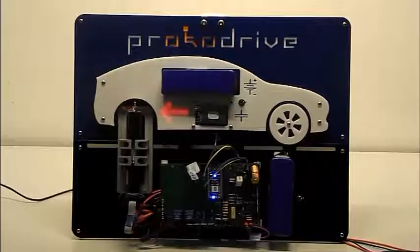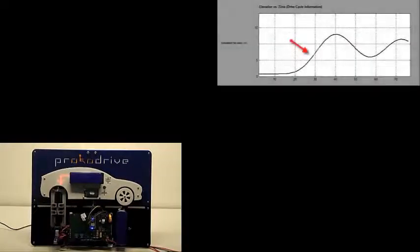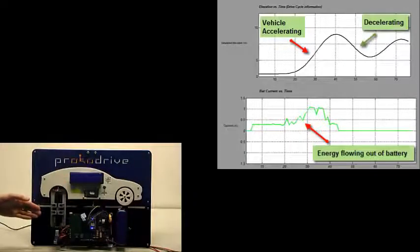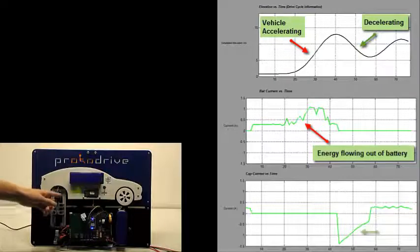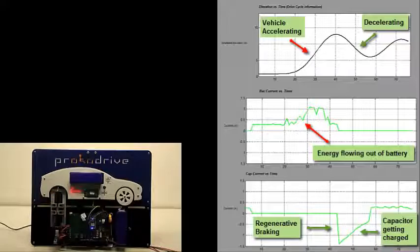So right now we're running the first 60 seconds of the United States urban driving cycle. And when the vehicle is accelerating, energy is coming out of the vehicle. So that's why we have a red arrow representing a flow to the environment. But when you're decelerating, you actually get regenerative braking, which is represented by a green arrow going into the device.